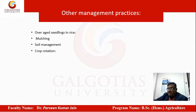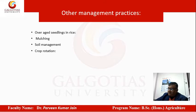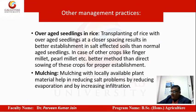Other management practices include transplanting overage seedlings in rice, which are less sensitive to salinity. Mulching helps in treating the soil. Crop rotations and use of organic matter are also beneficial, as adding organic matter is always helpful to bring soils back to health and neutrality. Transplanting rice with overage seedlings at a closer spacing results in better establishment.